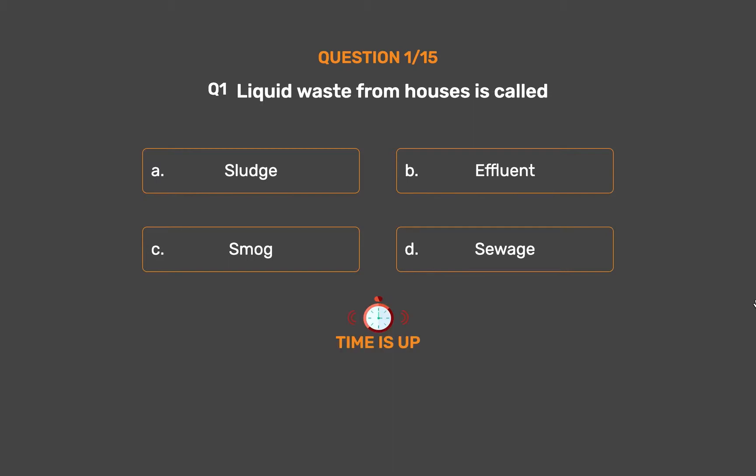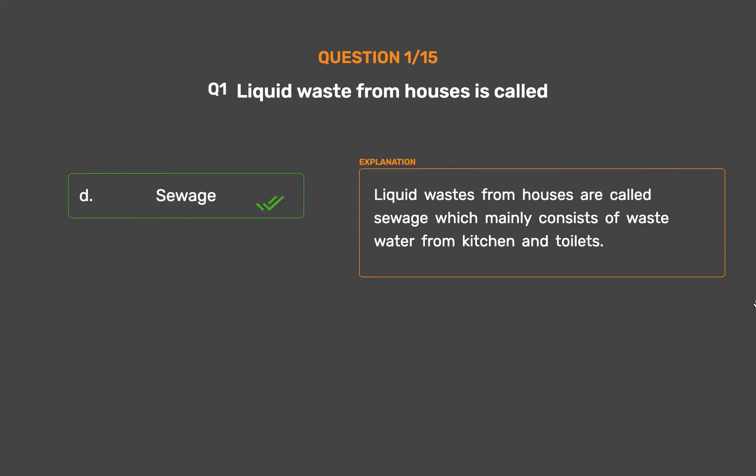The correct answer is Option D: Sewage. Liquid wastes from houses are called sewage, which mainly consists of wastewater from kitchen and toilets.